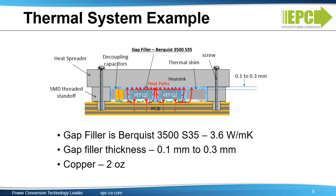Now let's look at a real-world example. Shown here is a cross-section of a half-bridge circuit that you might find in a buck converter, motor drive, or a whole host of DC-to-DC converters. For this example, we're going to add a heatsink and gap filler — in this example, Berquist 3500S35, which in its datasheet has a thermal conductivity of 3.6 watts per meter Kelvin. We're going to make sure that the thickness of the gap filler above the two FETs is between 0.1 millimeters to 0.3 millimeters, and we'll use 2-ounce copper in our PC board.